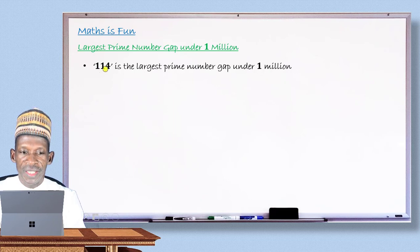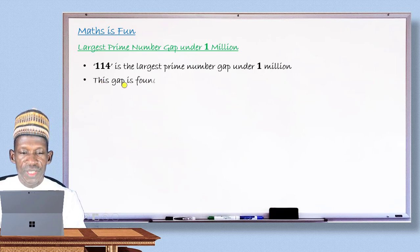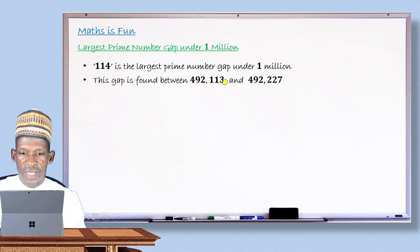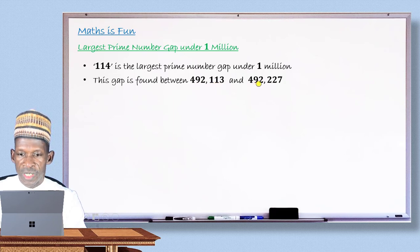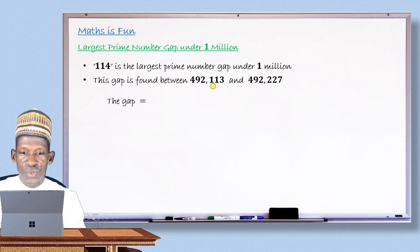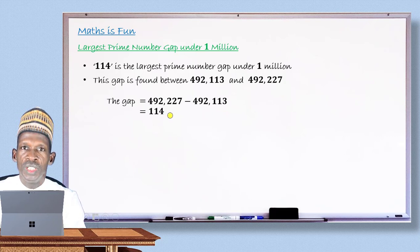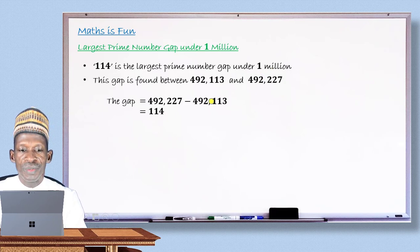The gap of 114 exists between the prime number 492,113 and the next prime number 492,227. Subtracting the smaller from the larger gives exactly 114 — the largest gap between any two consecutive prime numbers below 1 million. We'll see more interesting mathematics in subsequent lessons.